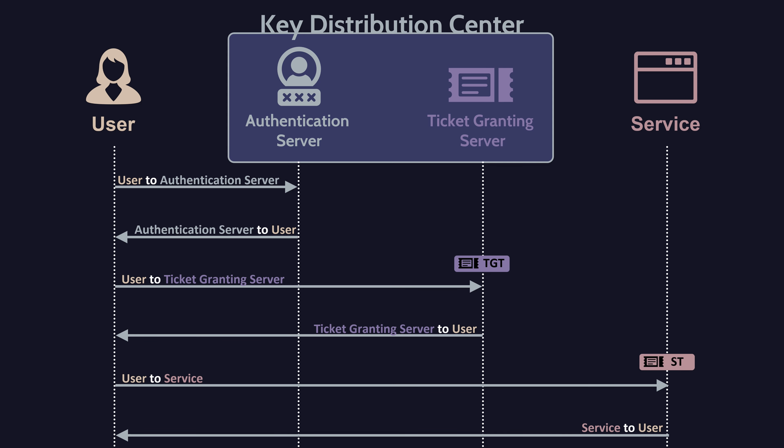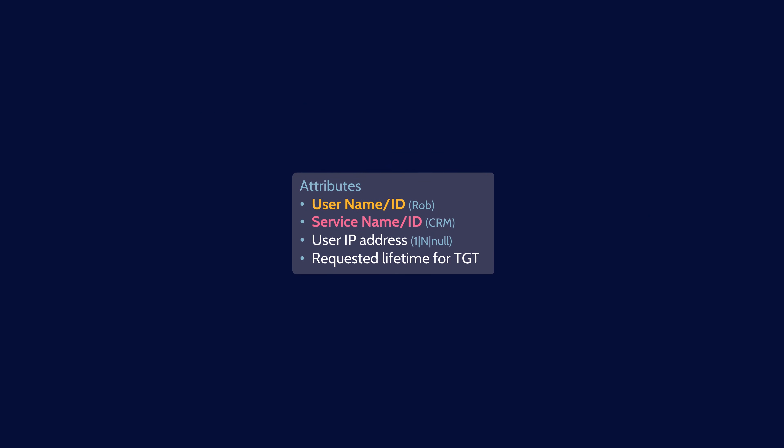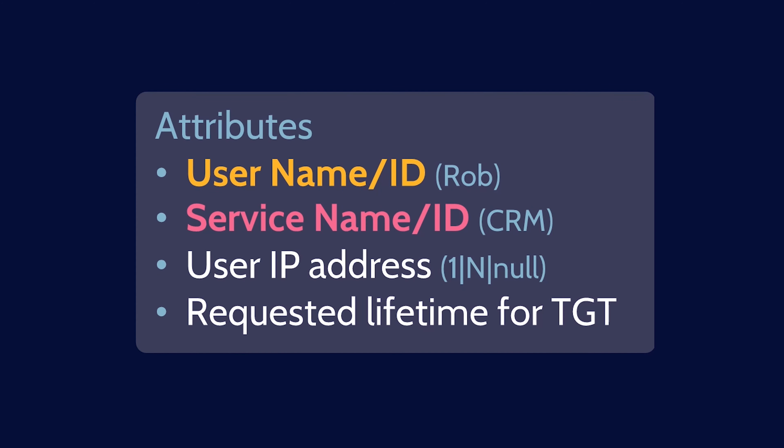But for fun, let's look at each of these steps and message exchanges in excruciating detail. We'll start at the very beginning with the first unencrypted message the user sends to the authentication server. The message contains the user's ID (we'll use Rob as the ID), the ID of the service the user wants to access (we'll use a CRM application as an example), the user's IP address — which can be a single IP address, multiple IP addresses, or even null depending on how Kerberos has been configured — and the requested lifetime of the ticket granting ticket.